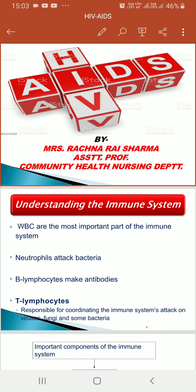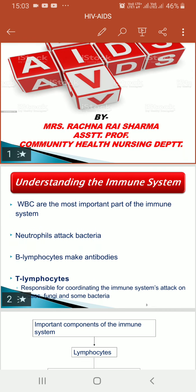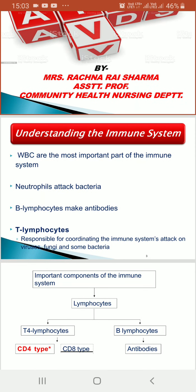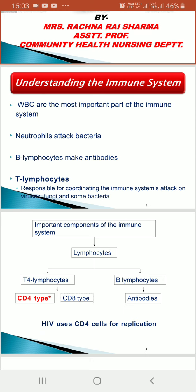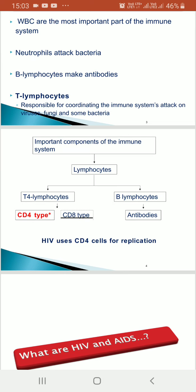Before understanding what HIV AIDS is, we will first understand what our immune system is and how it is affected in this syndrome. In our immune system, WBC is a very important part. Apart from that, neutrophils, B lymphocytes, and T lymphocytes — neutrophils attack bacteria, B lymphocytes make antibodies, and T lymphocytes are responsible for coordinating the immune system's attack on viruses, fungi, and some bacteria.